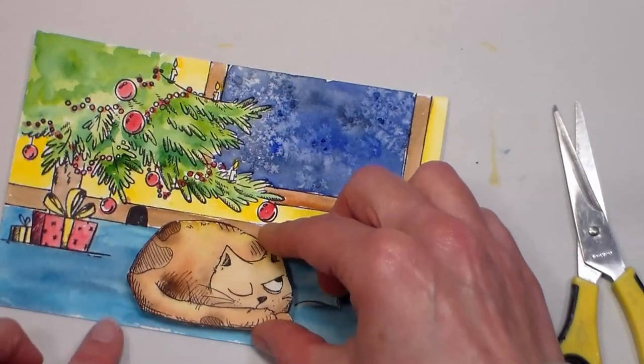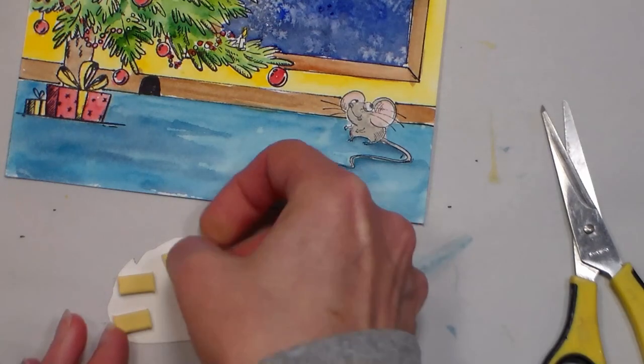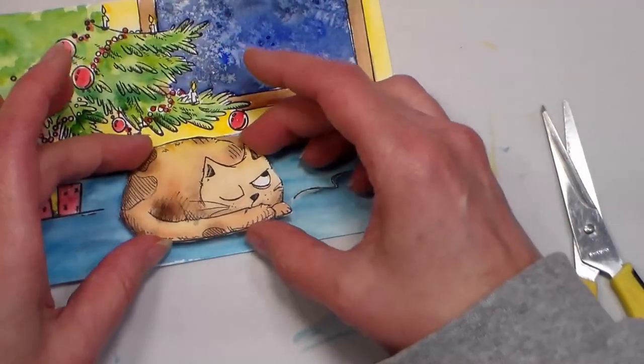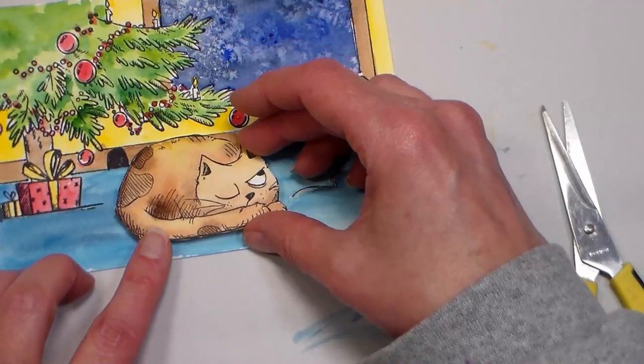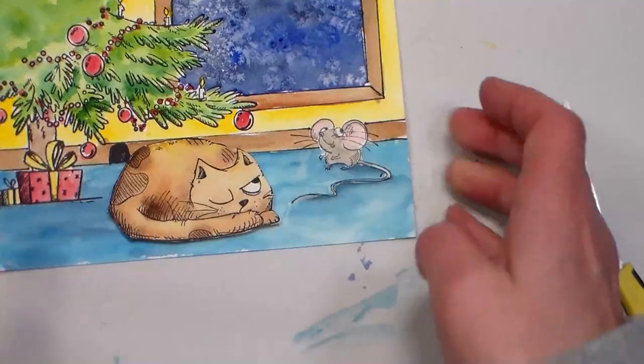And I kind of just played with the placement here before I decided to adhere it, and then I used some foam squares to pop him up off the page. I thought it would give it some nice dimension, bring him out in front of the mouse where he's kind of sleeping with one eye open, keeping an eye on that guy, and I thought it would be really cute, and I just pressed him in place.